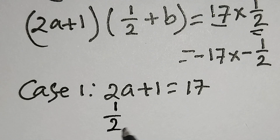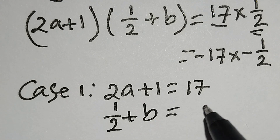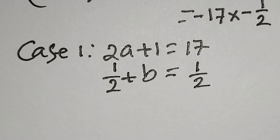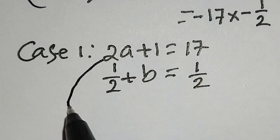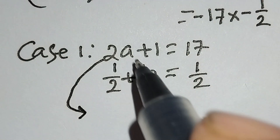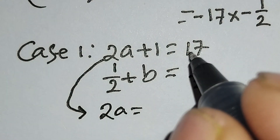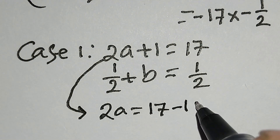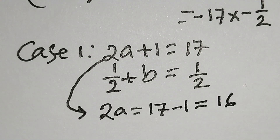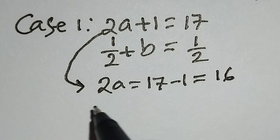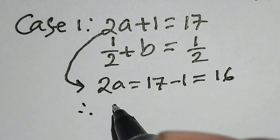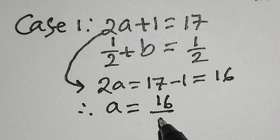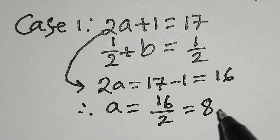From 1/2 + b = 1/2, we get b = 0. From 2a + 1 = 17, we get 2a = 17 − 1 = 16, therefore a = 16/2 = 8.